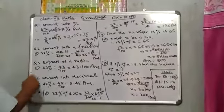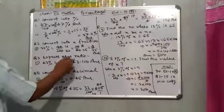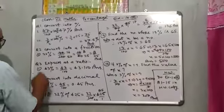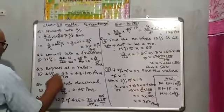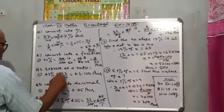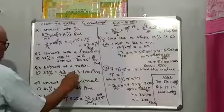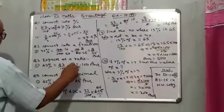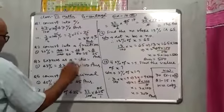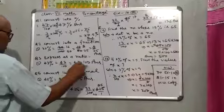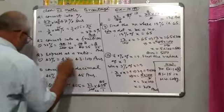Question number 3: Express as a Ratio. First part: 43% will be equal to 43 upon 100, which will be equal to 43 ratio 100. That is the correct answer.